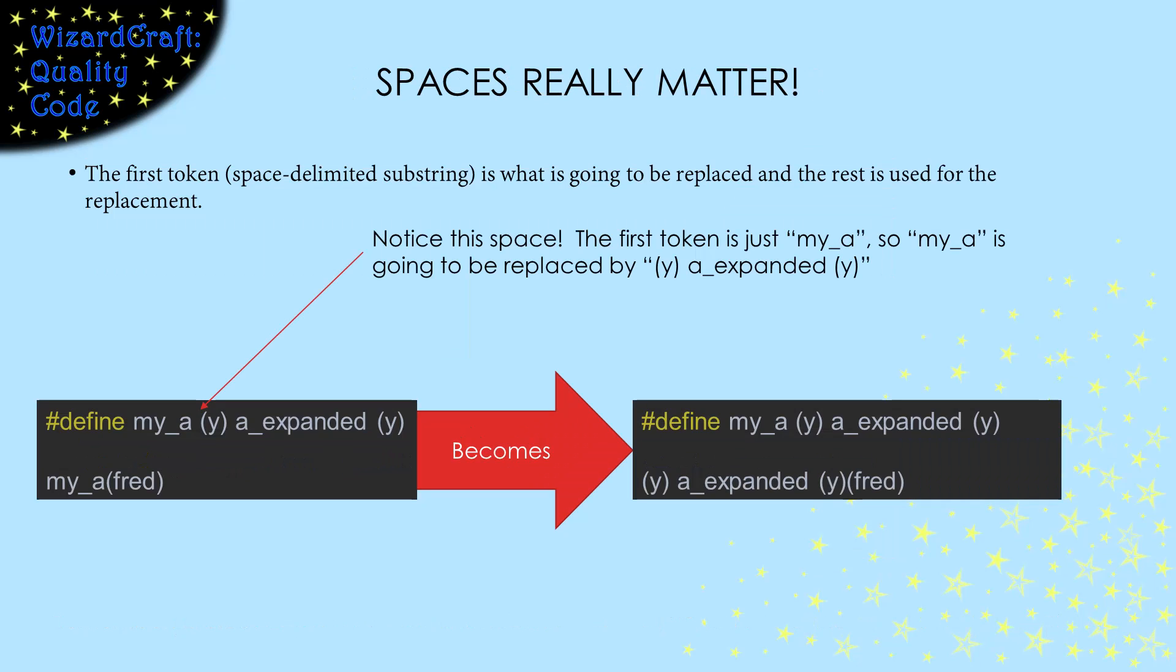That's the basics of pound-define, but there are lots of details that really matter when you're writing them. First, spaces are critical. The token that will be replaced is space-separated. So, if you accidentally put a space between the name and the parameter list, it will think the parameter list is part of the replacement string. When you try to use it, it will replace the name myA by everything after the myA, and will leave the parentheses and your argument completely alone.